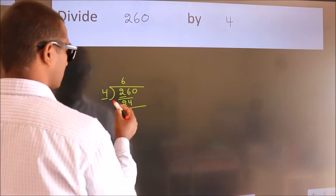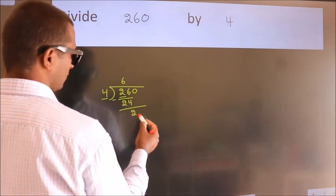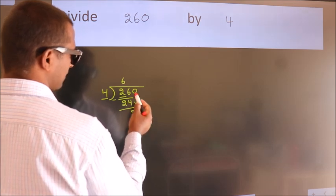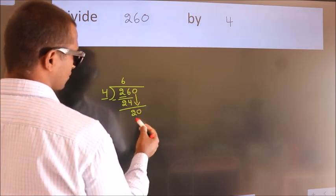Now we should subtract. We get 2. After this, bring down the beside number. So 0 down, giving us 20.